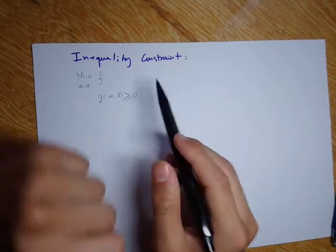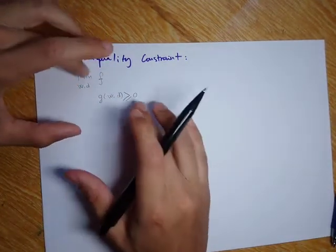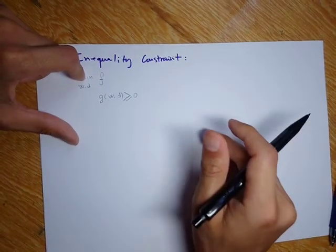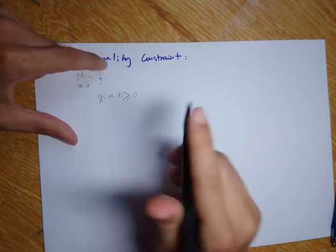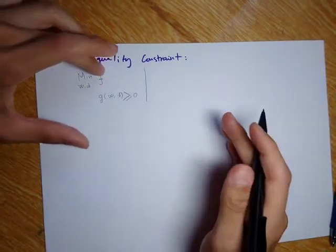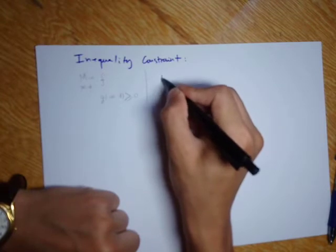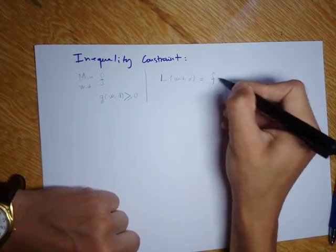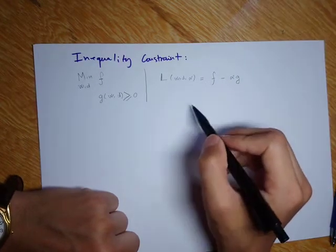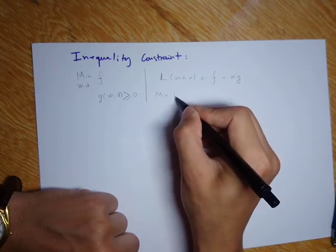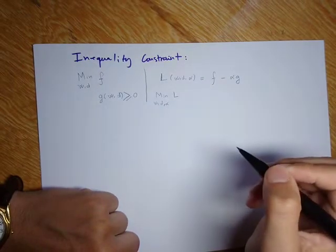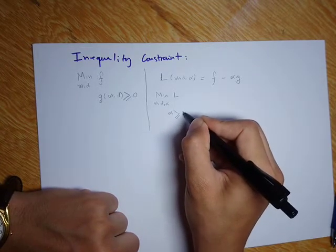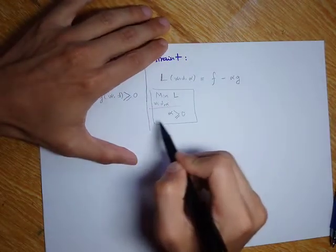How to solve that? What the Lagrangian does in this case is that it transforms this constrained optimization problem into again a constrained optimization problem, but it is kind of relaxed. The new problem we will try to optimize is the Lagrangian: F minus alpha times G. We minimize this for W, D, and alpha, with the constraint that alpha should be higher or equal to zero.